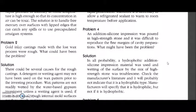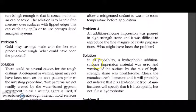The problem says: an addition silicone impression was poured in high strength dental stone and it was difficult to reproduce the fine margins of the cavity preparation. What might have been the problem? A cavity was prepared in a tooth, the impression was taken with addition silicone impression material, and when high strength dental stone was poured into the impression to make a cast, it was very difficult to reproduce the fine margins. The answer is that in all probability a hydrophobic addition silicone impression material was used, and wetting of the surface by the mix of high strength stone was troublesome.